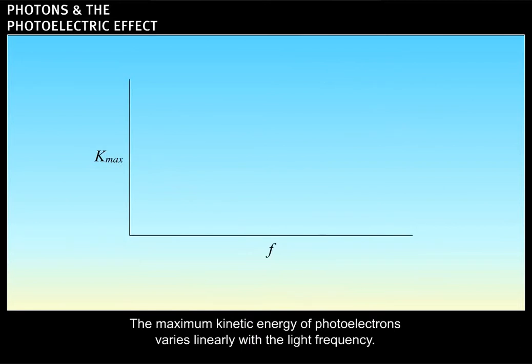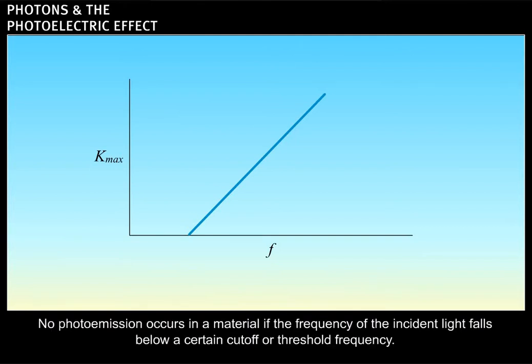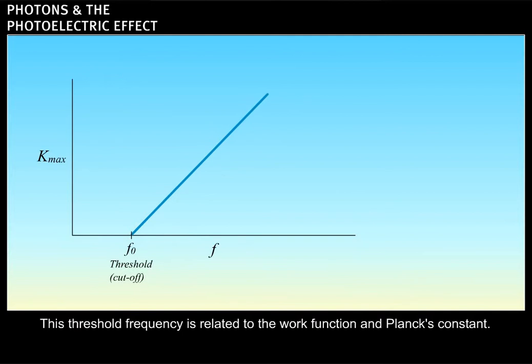The maximum kinetic energy of photoelectrons varies linearly with the light frequency. No photoemission occurs in a material if the frequency of the incident light falls below a certain cutoff or threshold frequency. This threshold frequency is related to the work function and Planck's constant.